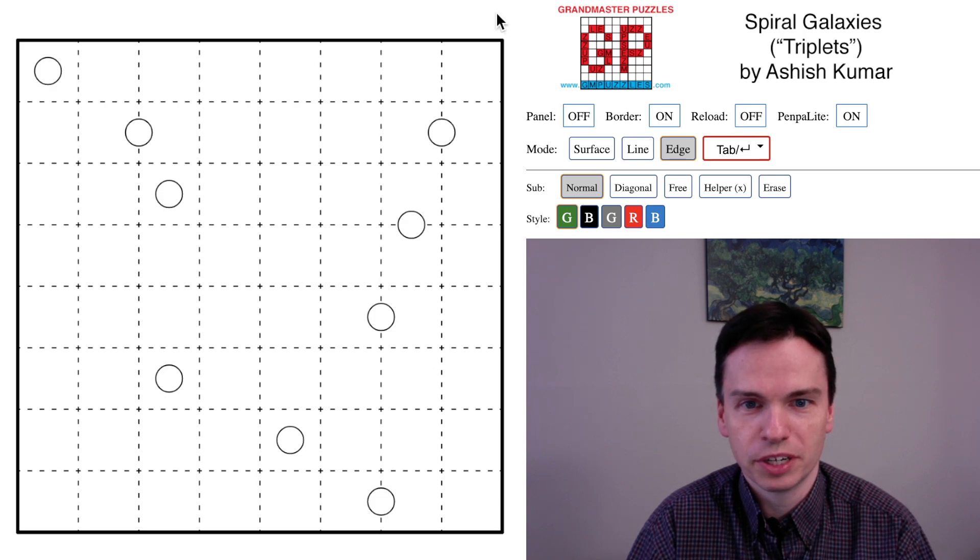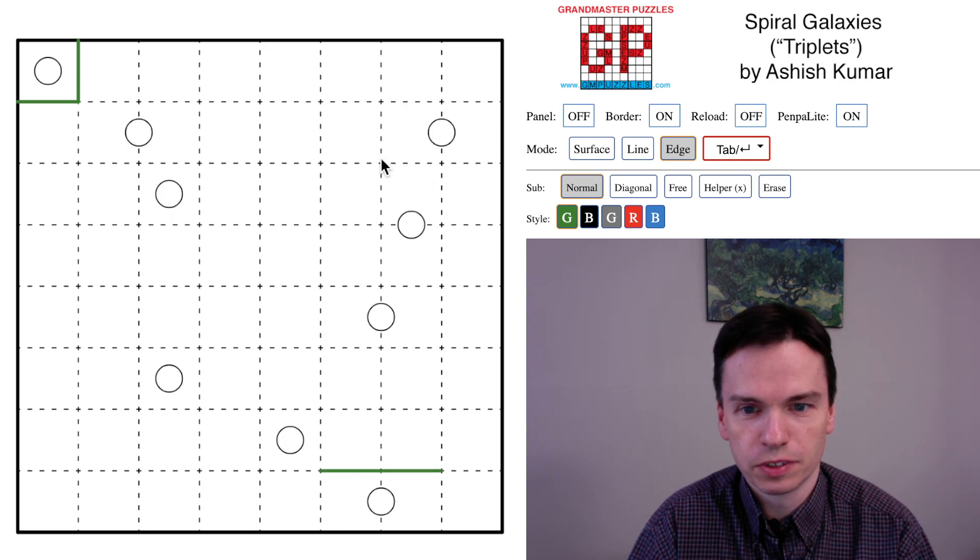So we're here to solve this spiral galaxies puzzle by Ashish Kumar called Triplets. Got some edges we can mark off quickly as in a lot of these puzzles. One that looks pretty key is this edge between these groups which actually shades off this cell.